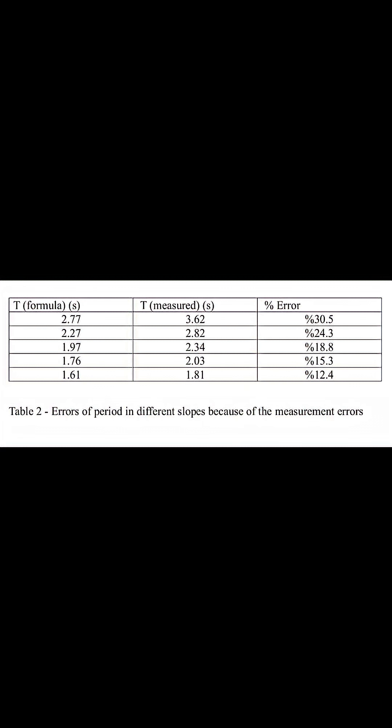However, table 2 shows that measured periods were consistently higher than theoretical ones. Crucially, the error follows a systematic trend. It was highest at 30.5% for the smallest angle of 6 degrees, but dropped significantly to 12.4% at 18 degrees.